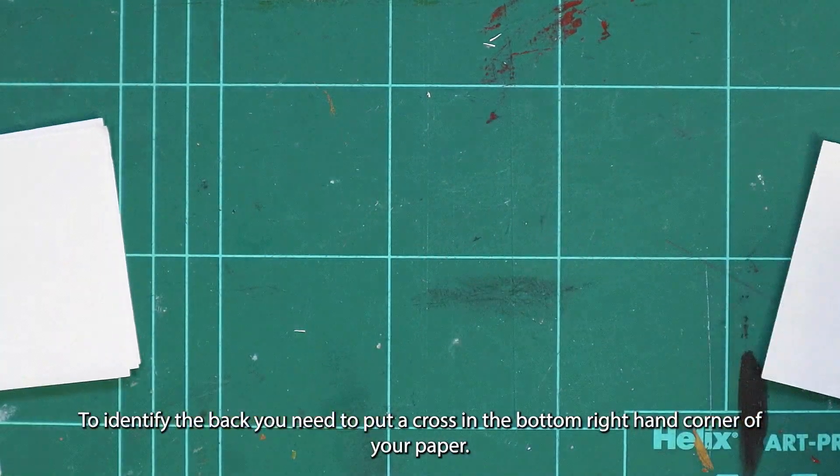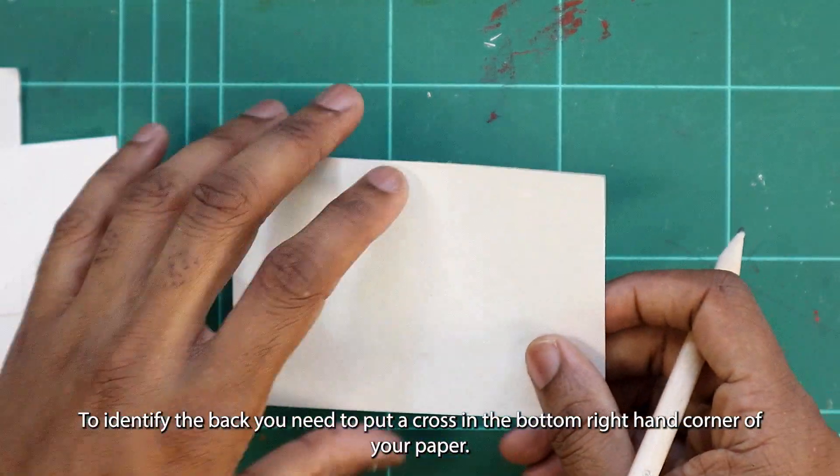To identify the back, you need to put a cross in the bottom right hand corner of your paper.